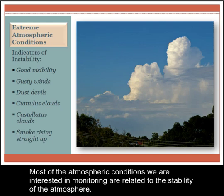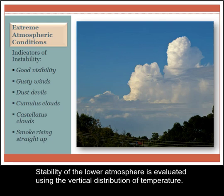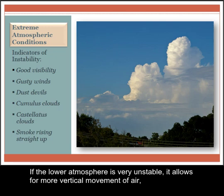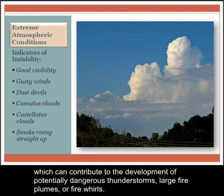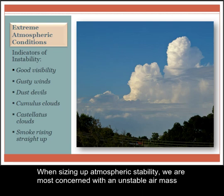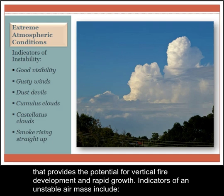Now we'll look at some atmospheric conditions that you would want to note in the comments column of the fire weather observations form, and in some cases communicate by radio to fire line personnel. Most of the atmospheric conditions we are interested in monitoring are related to the stability of the atmosphere. Stability of the lower atmosphere is evaluated using the vertical distribution of temperature. The atmosphere is considered stable if parcels of air resist vertical displacement, meaning convection is suppressed. If the lower atmosphere is very unstable, it allows for more vertical movement of air, which can contribute to the development of potentially dangerous thunderstorms, large fire plumes, or fire whirls.